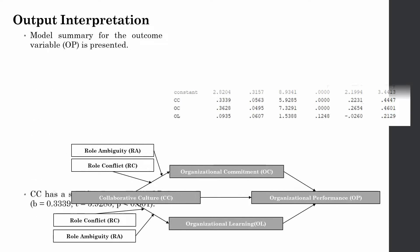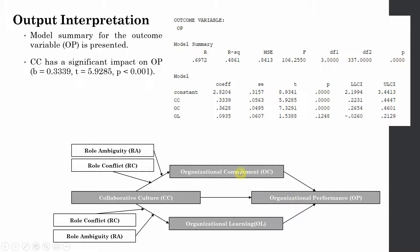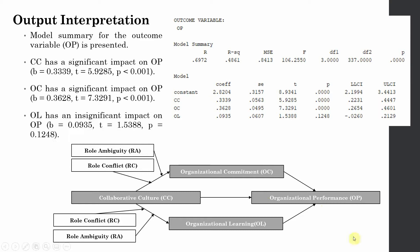Finally, we have the model where organizational performance (OP) is being influenced by three exogenous variables. Collaborative culture is significant, organizational commitment is significant, but organizational learning is insignificant — it does not have any impact on organizational performance. There is no interaction term here because there are no moderators in the relationships leading up to organizational performance.